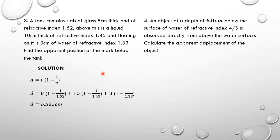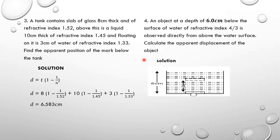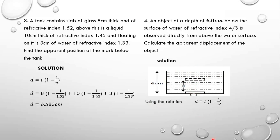An object at a depth of 6 centimeters below the surface of water of refractive index 4/3 is observed directly above the water surface. Calculate the apparent displacement of the object. Using D equals T times (1 minus 1 over N), where T is 6 and N is 4/3, we get 1 over N equals 3/4. Substituting gives D equals 1.5 centimeters.